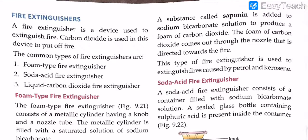Fire extinguishers are substances that extinguish the fire — if there is a fire somewhere, it removes it completely. A fire extinguisher is a device used to extinguish fire, and carbon dioxide is used in this device because it does not support combustion, neither is it combustible. The common types of fire extinguishers are three: foam type fire extinguishers, soda acid fire extinguishers, and liquid carbon dioxide fire extinguishers. We are going to go through all of these and see how carbon dioxide is actually used in each of them.